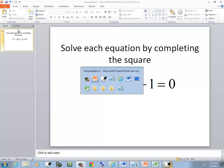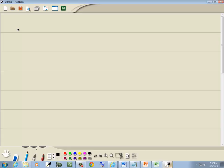Solve this problem by completing the square. Got x squared plus 6x plus 1 equal to 0.